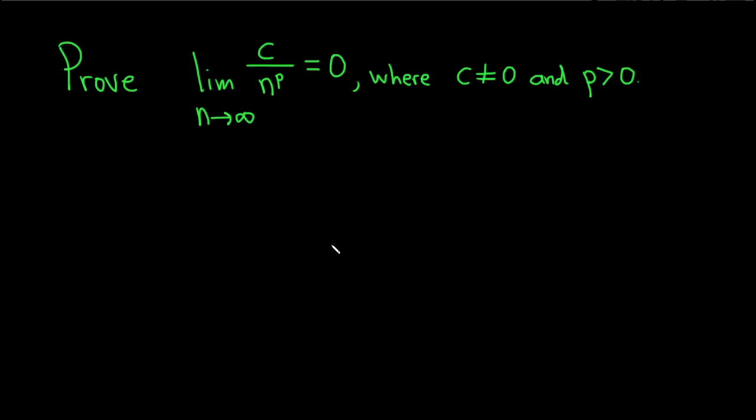In this problem, we're going to prove that the limit as n approaches infinity of c over n to the p is equal to 0, where c is non-zero and p is a positive number.